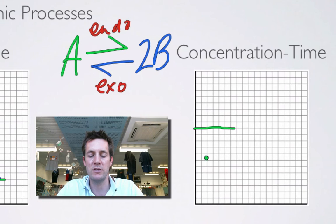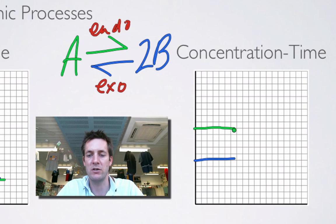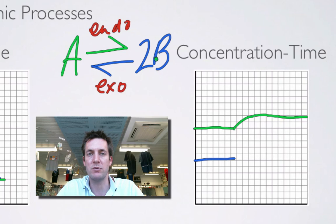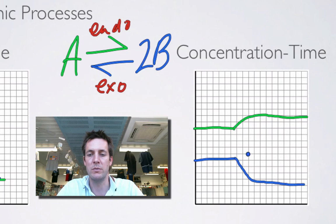Concentrations of reactants and products: we are favouring the backward reaction here. The concentration of A is going to increase by, let's say, two squares until it levels off. But the concentration of B is going to change by twice as much because we've got two moles of B to every mole of A. So that one's going to go down by four squares. They should be changing over the same course of time and ending up flat.